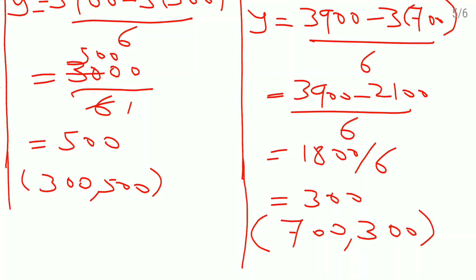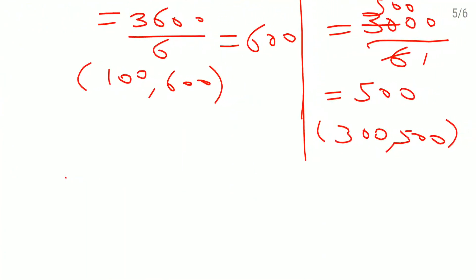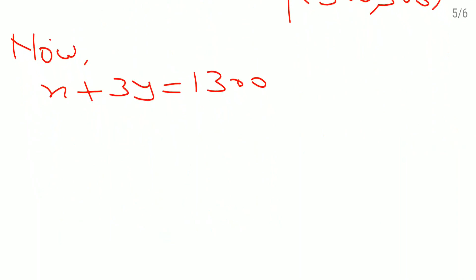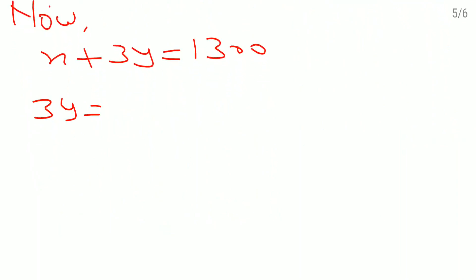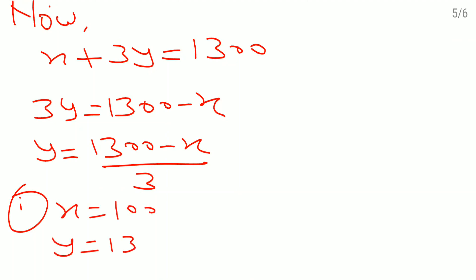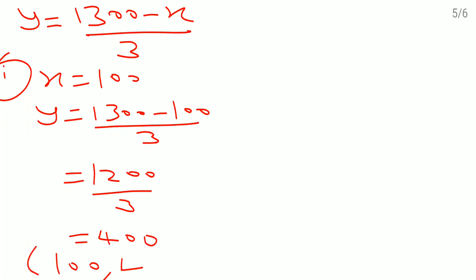We got three solutions for the first equation. Now we will go for the second equation: x + 3y = 1300. I will rewrite it as y = (1300 − x) / 3. For x = 100: y = (1300 − 100) / 3 = 1200 / 3 = 400. So the first solution for the second equation is (100, 400).